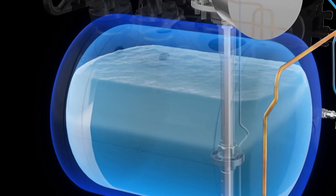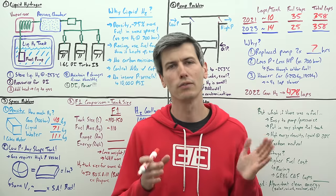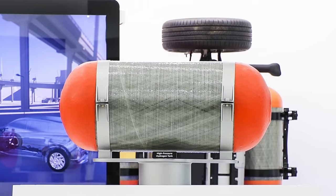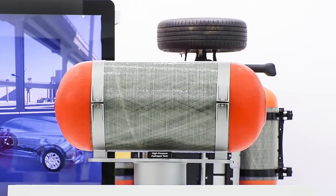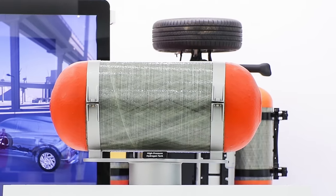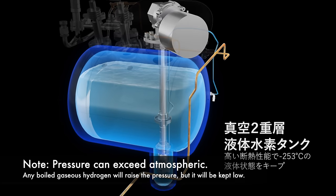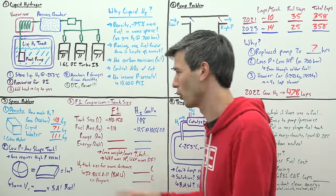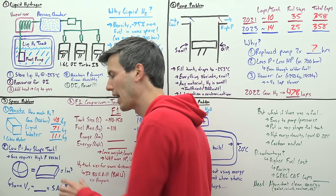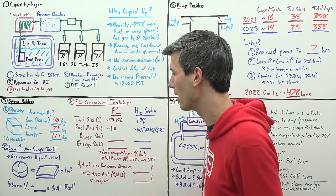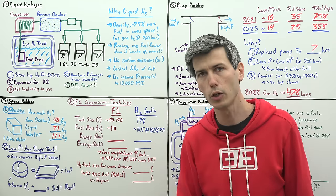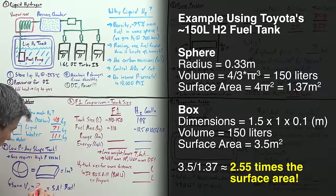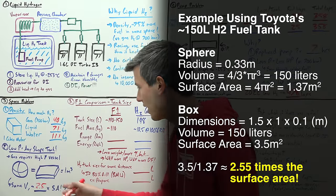In theory one advantage of liquid hydrogen is that you have more flexibility with the tank shape. With gaseous hydrogen you have to use these high pressure vessels which have a cylindrical shape ideal for containing high pressures. You don't have that challenge here because we're keeping it at atmospheric pressure. In theory this is true, but in practice it's not really true. Why? Take a sphere and then a very long flat rectangular box, both with a volume of one cubic meter.